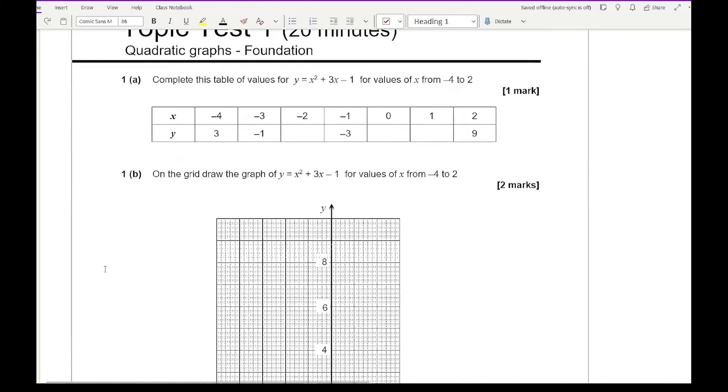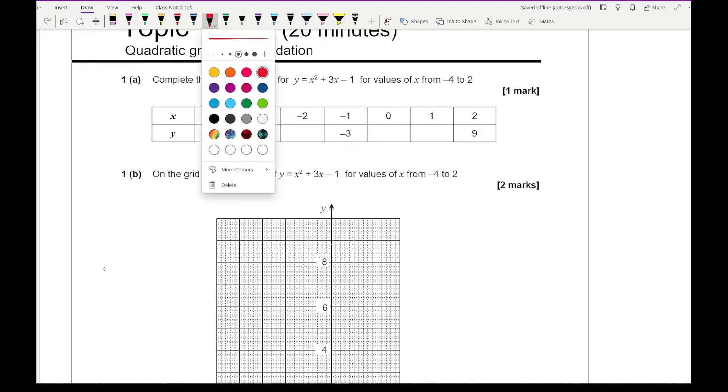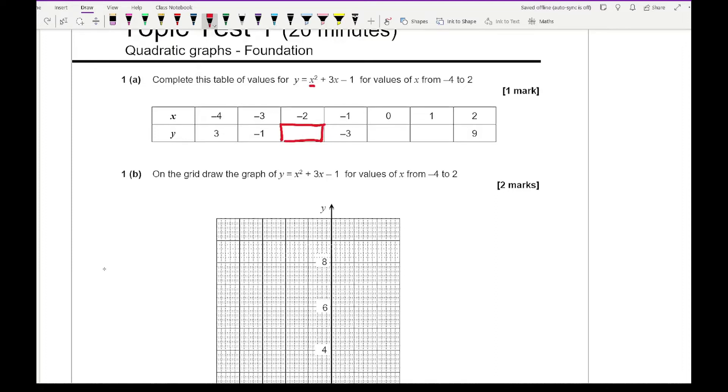Question 1 says complete this table of values for y equals x squared plus 3x minus 1. We need to substitute the x values into the formula to work out our values. If this was on a non-calculator paper, all I need to do for when I'm using minus 2 is actually just swap minus 2 in brackets, because it's a negative number, for where I see an x. So this is going to be minus 2 squared plus 3 times minus 2 minus 1.